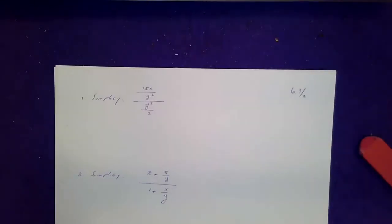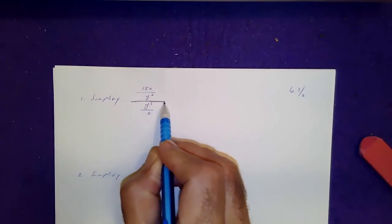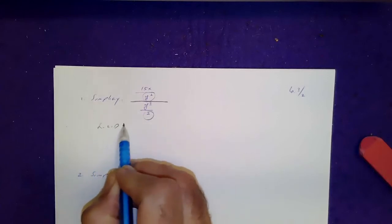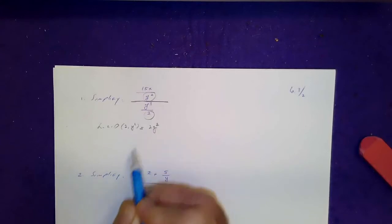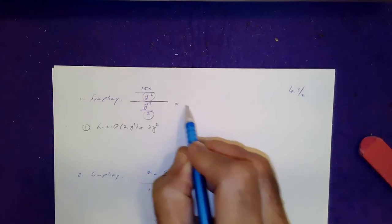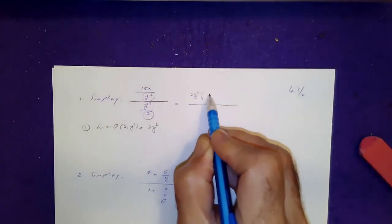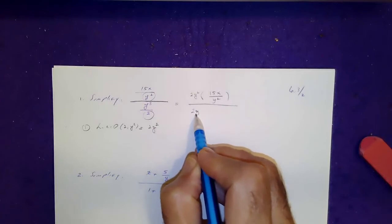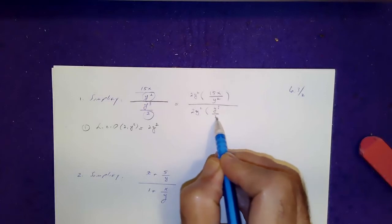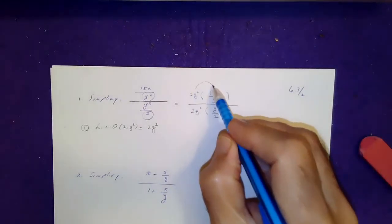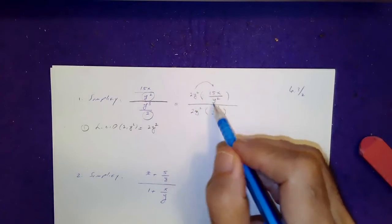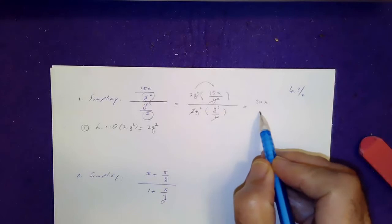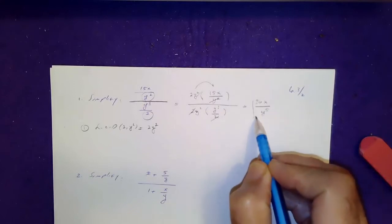Next, we have algebraic fractions. This is your main fraction line. Find the lowest common denominator of y squared and 2. The lowest common denominator of 2 and y squared is 2y squared. Multiply top and bottom of the main fraction line by 2y squared. Then remove the parentheses — these guys cancel, so you get 30x. Here the 2's cancel, and you get y to the power of 5. Final answer.